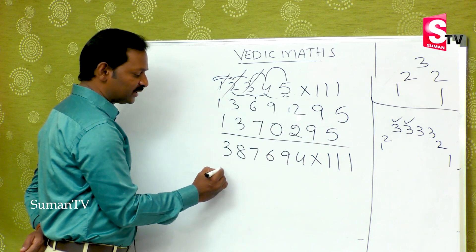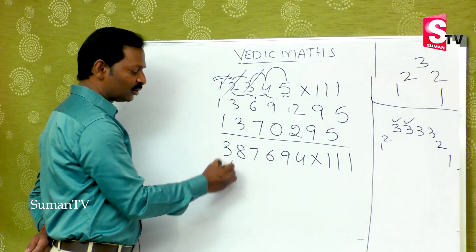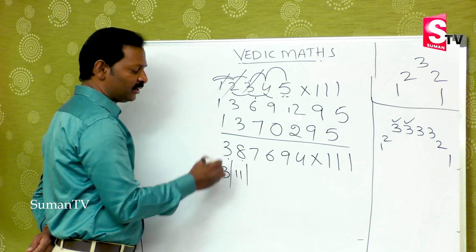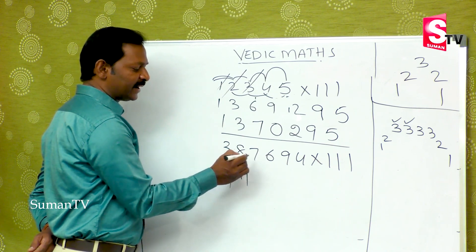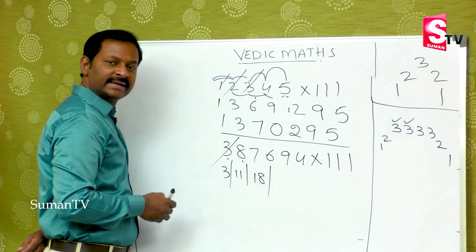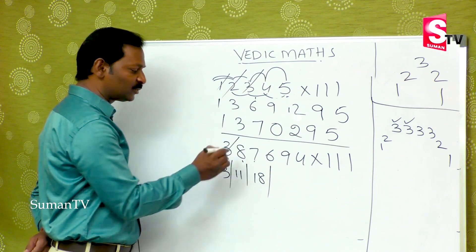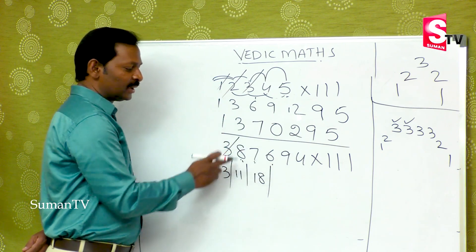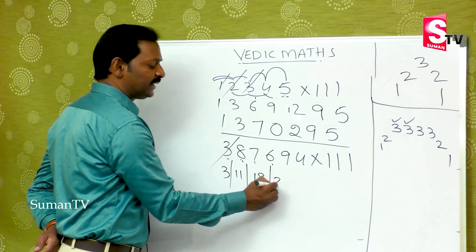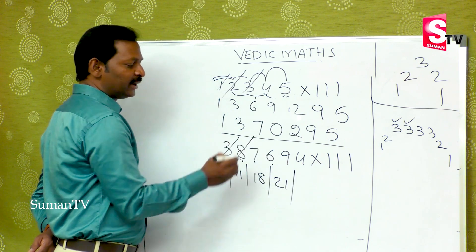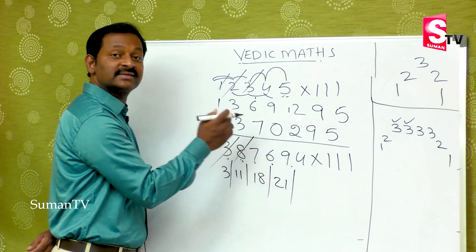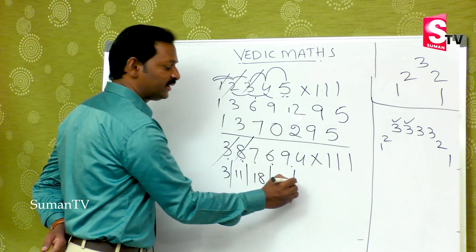The first number is 3. First plus second is 11. First, second, and third is 18 — you can cancel it. Next: 1, 2, 3. Eight plus 7 is 15, 15 plus 6 is 21 — cancel. Next: 7, 6, 9. Seven plus 6 is 13, 13 plus 9 is 22 — cancel.